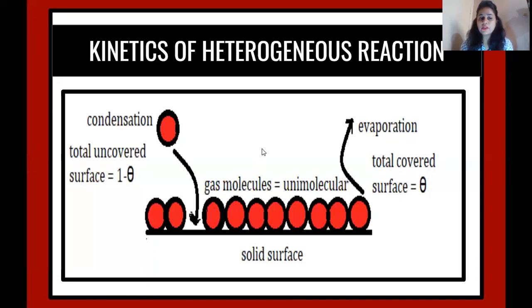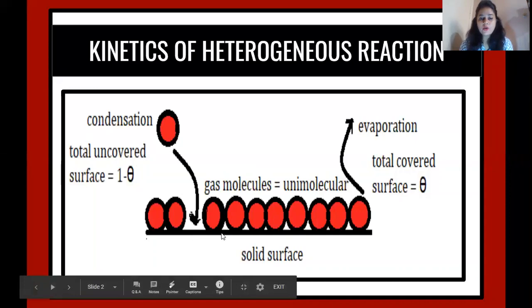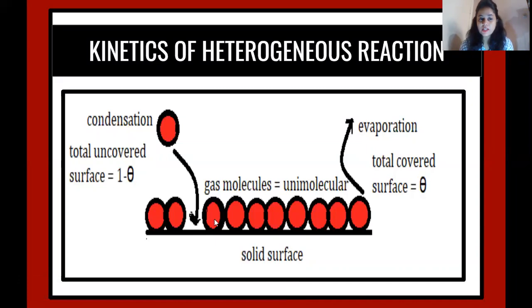The basic difference between absorption and adsorption is that adsorption will only be a surface phenomenon, while on the contrary, absorption will be the phenomenon which will take place in the entire surface as well as in the bulk of that surface area. We have a solid surface, and the gas molecules are getting adsorbed on the surface of solids. The gas molecules will be adsorbed only in the unimolecular layer — no other gas molecule can be adsorbed on top of those already adsorbed on the surface of solid.